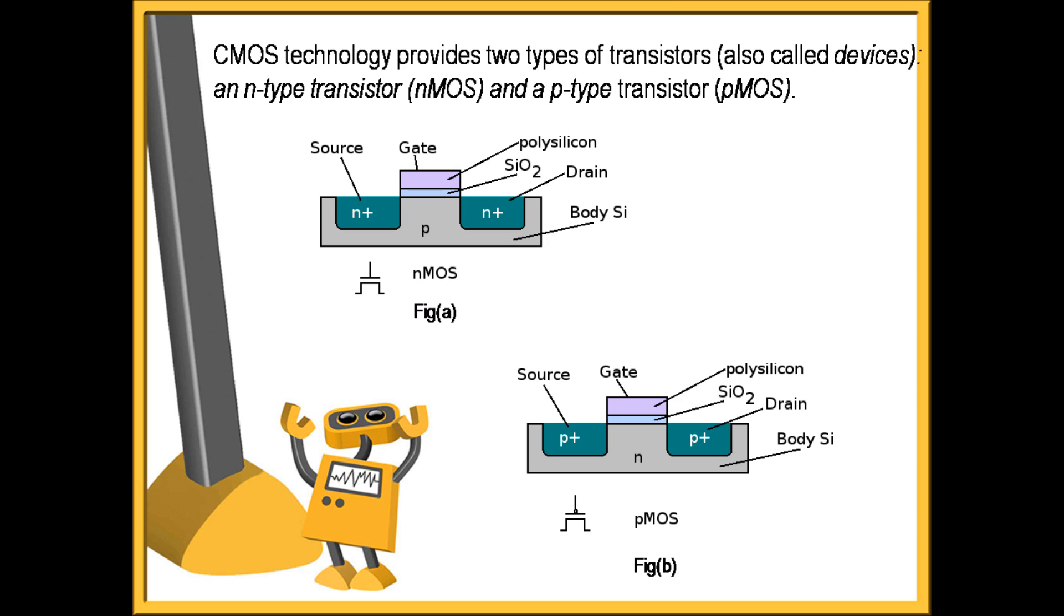Similarly, for PMOS, it is built in N-well with P-doped source and drain junction and N- or P-doped gate. Applying a negative voltage between gate and drain terminal with respect to the source causes holes to flow between drain to source, i.e., negative drain current. This is the overall functioning of CMOS transistor which includes NMOS and PMOS.